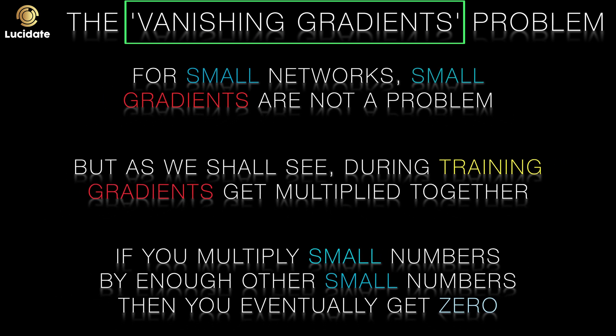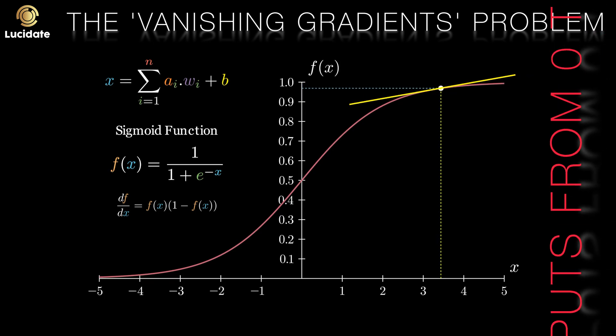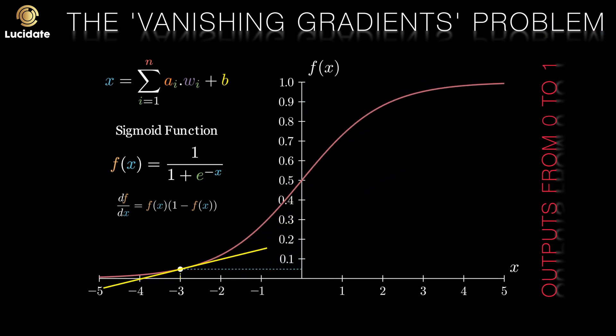So while it's true that sigmoid functions do have their uses, don't consign them to the scrap heap yet. They're not the ubiquitous workhorses that they once were. But if you want a value between zero and one, maybe for models that are predicting a probability where likelihood only exists in a range between zero percent and one hundred percent, they might be a good choice.